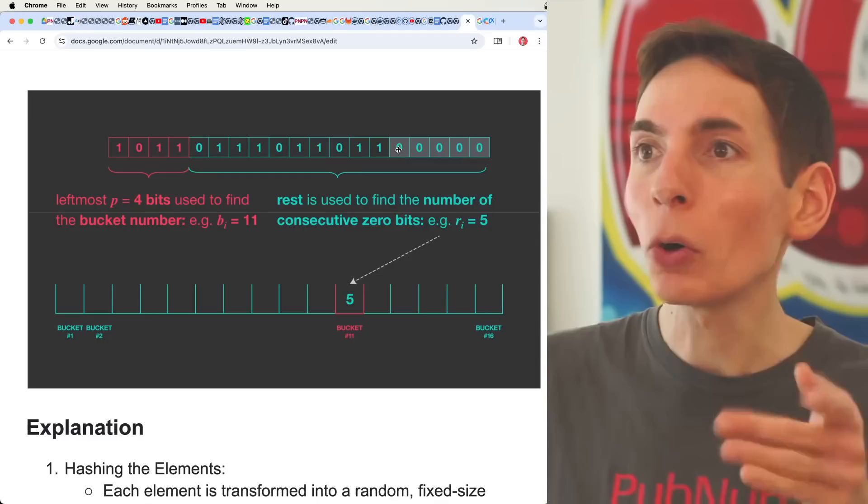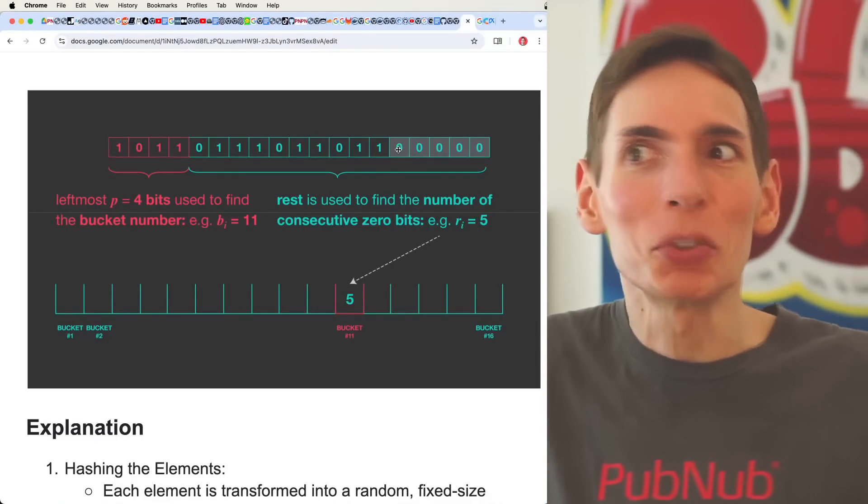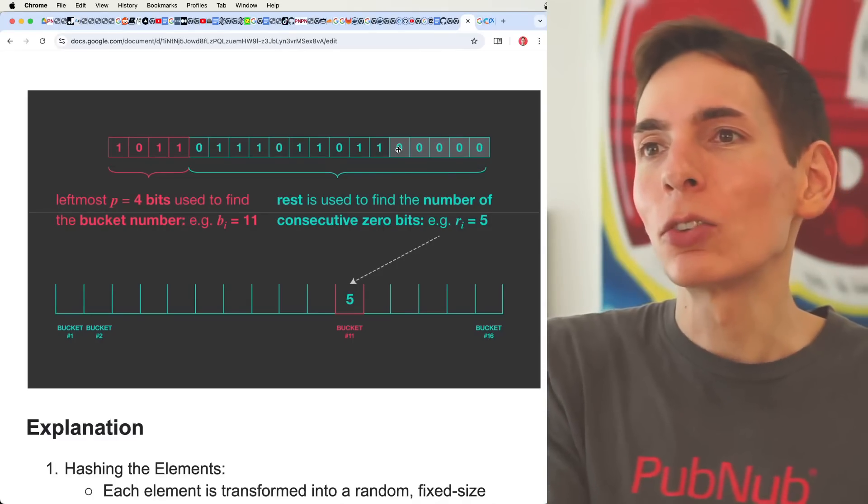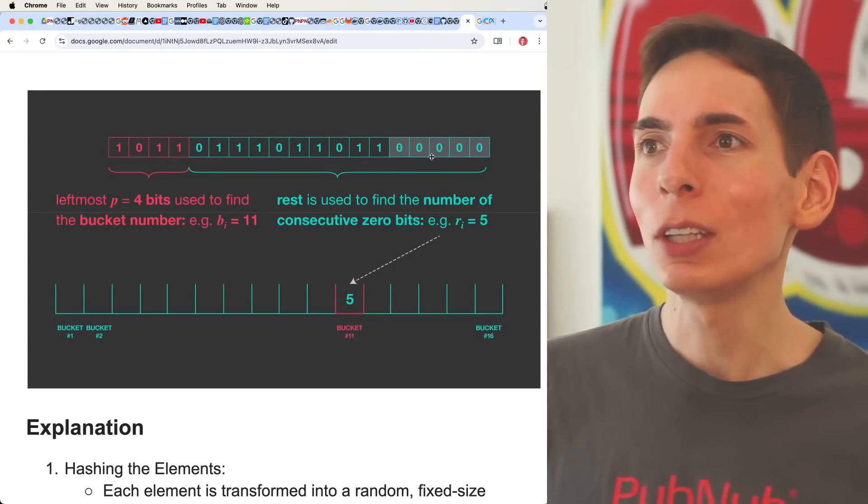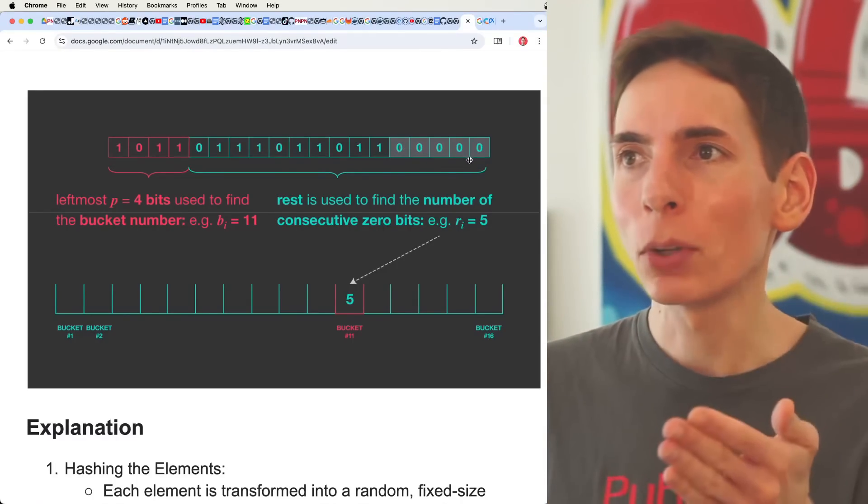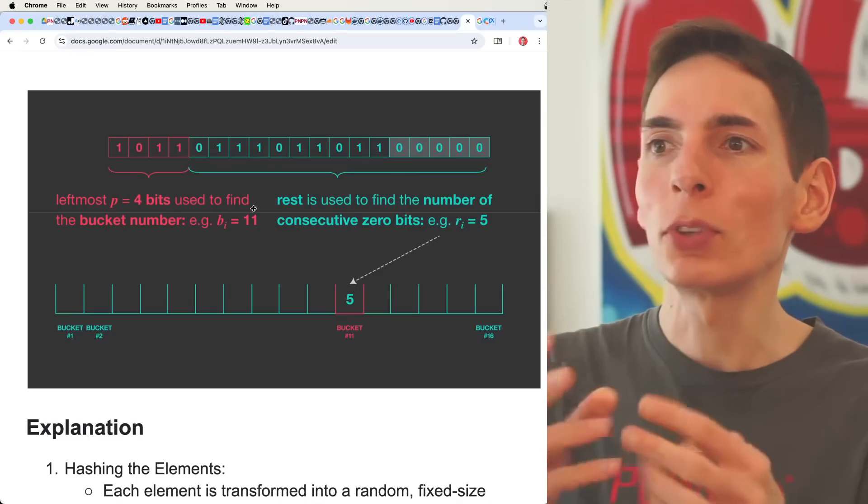You just count the number of zeros. Or you can count the number of ones if you want. You can go either direction. There's no set reason to do it. You're just needing to count a probability of its position.